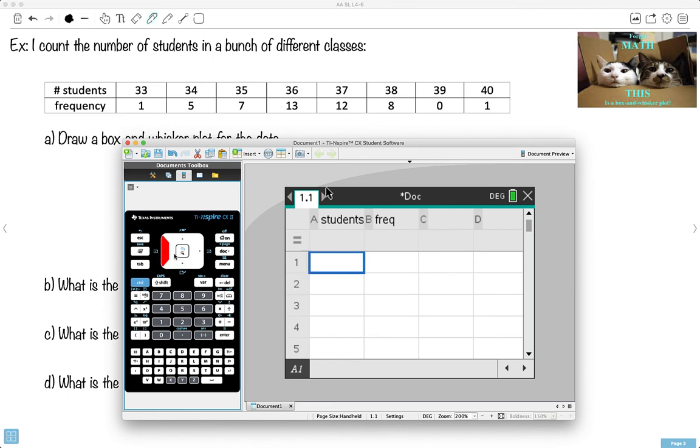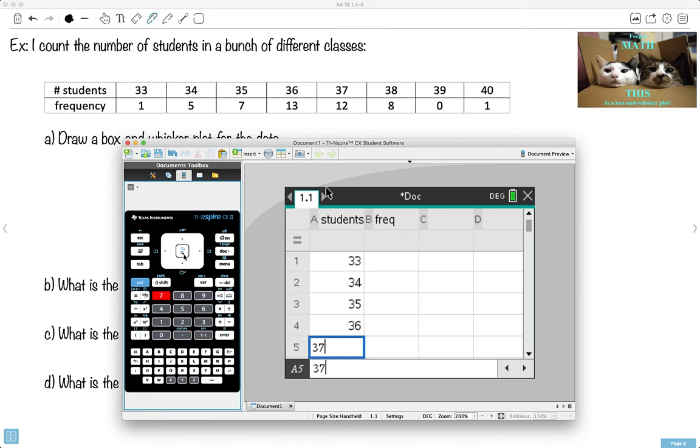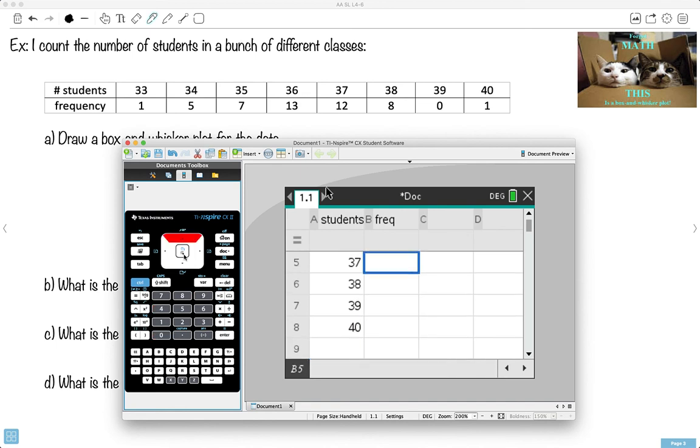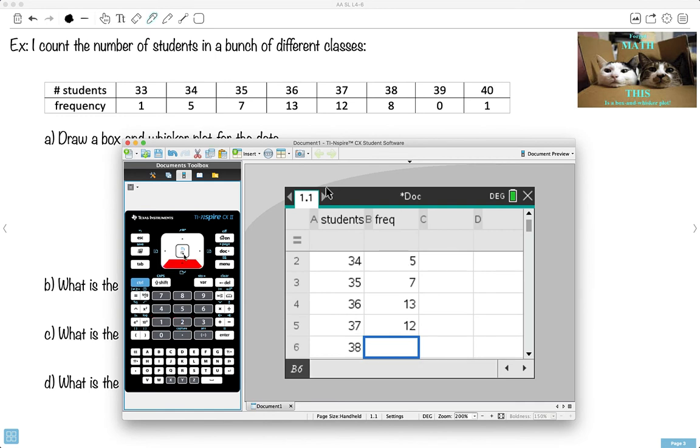And then I'll go ahead and put them all in. So 33, 34, and I'll just keep going. 35, 36. This is the boring part. But hopefully it's easy. You're just putting in the data in the list. And then for my frequency: 1, 5, 7, 13, 12, 8, 0. There's none with 39. And then there's one with 40. There we go.